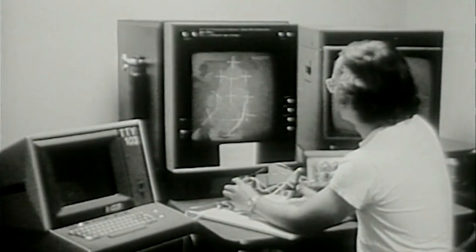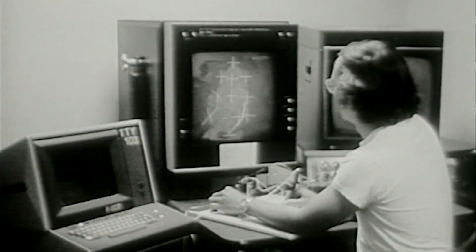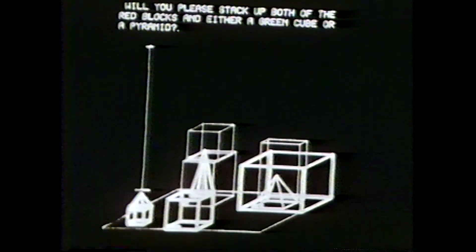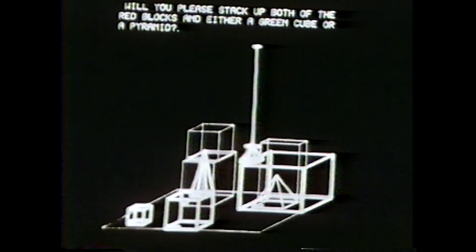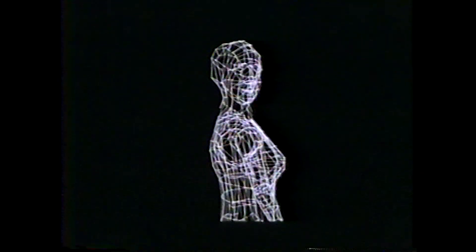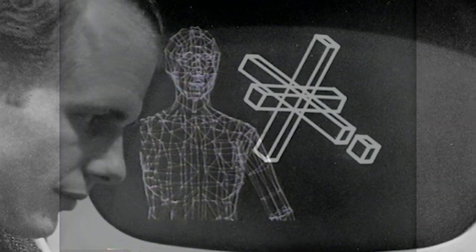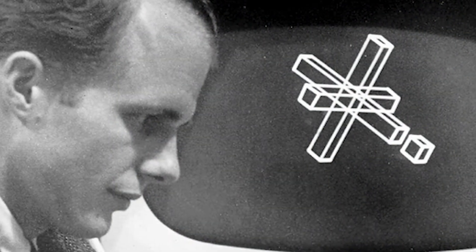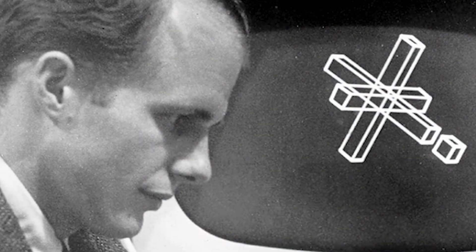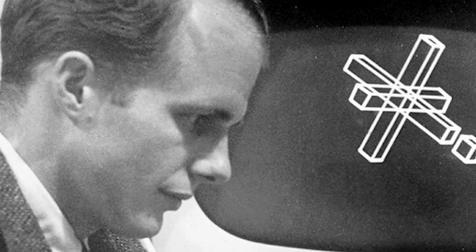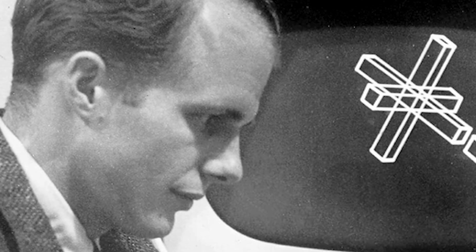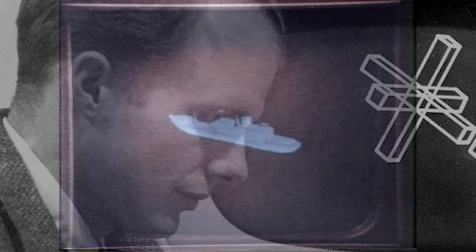In the early days of computer graphics, figuring out what should not be seen in the background was more difficult than what could be seen in the foreground. Enter John Warnock, who in 1968 created a hidden surface algorithm to solve this problem.